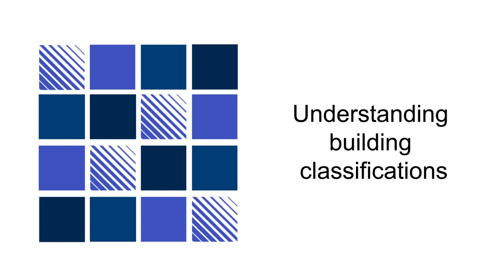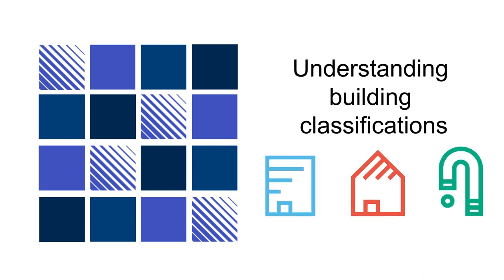There is one set of building classifications in the NCC and they are used within all volumes. You have probably referred to different building classifications as you go about your work or heard others talking about them — for example, talking about whether a building was a Class 1A or Class 1B building, or discussing whether a particular kind of building met the requirements for a Class 6 building. Most of the requirements in the NCC apply to a specific classification of buildings, so you will need to identify which classification any relevant building belongs to, and know where to go when you need an authoritative decision on which classification is most appropriate when there are arguments for it falling under more than one classification. That's what you will learn about in this presentation.